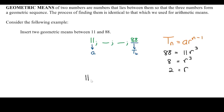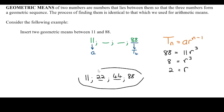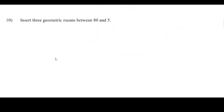If r is 2 and our first term is 11, the next term is 22, then we multiply by 2 to get 44. We should get a warm fuzzy feeling because when we multiply 44 by 2 we get 88. There are our four numbers forming a geometric progression, and these are the two geometric means we've put in the middle.